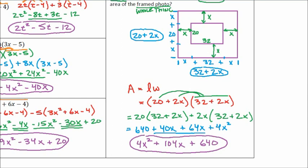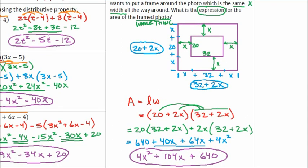Hope that made sense. I know I went through it in detail. You'll see lots of problems set up the exact same way — they'll give you a swimming pool with a walkway the same width all the way around, a picture with a frame, or a garden with a pathway all the way around. All of these are drawn and figured out the exact same way.